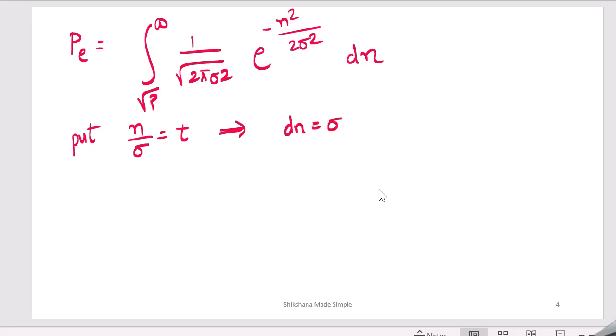So let us use a change of variable. Put n by sigma equals t, so dn = sigma dt. Whenever n is equal to infinity, t also goes to infinity, and whenever n becomes square root of P, t would become square root of P by sigma.